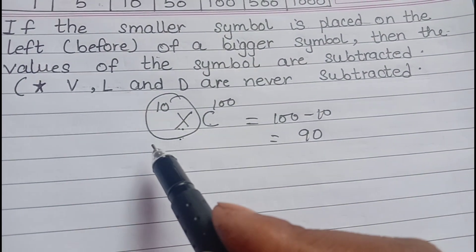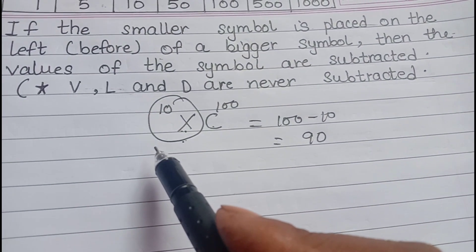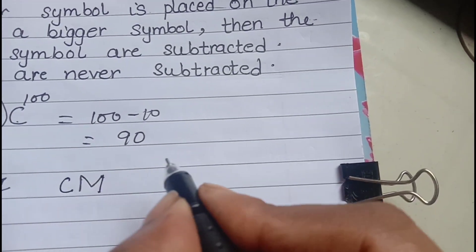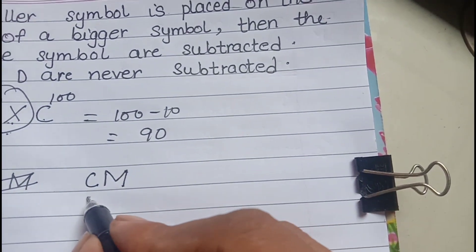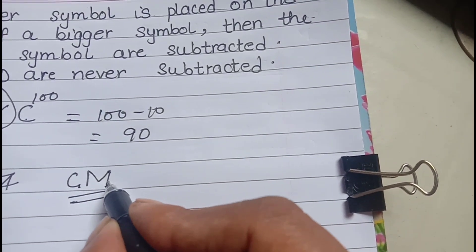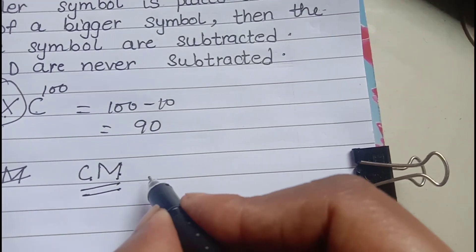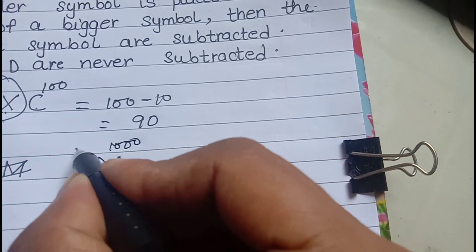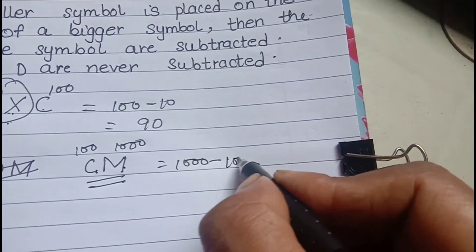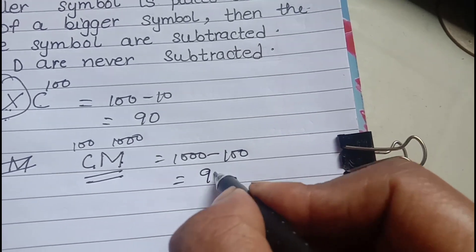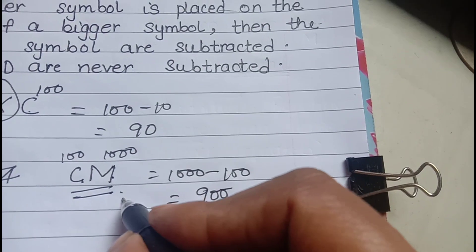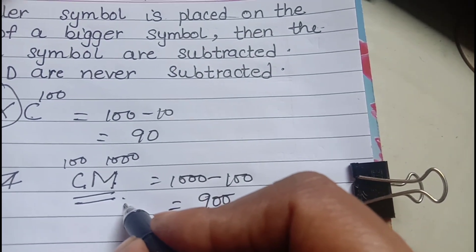For example, CM — C is the smaller symbol and M is the bigger symbol, so it is 1000 minus 100 which equals 900.